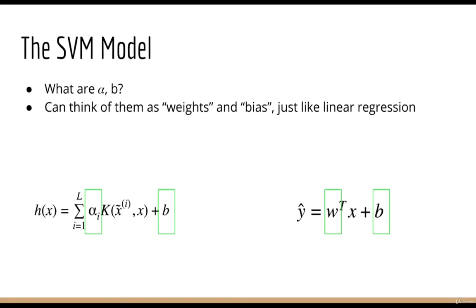Next, the parameters of the model are alpha and b. We can think of the alphas as weights, and b as the bias term. So this is similar to linear regression, where you have w transpose x plus b, where w represents your weights, and b is your bias term.